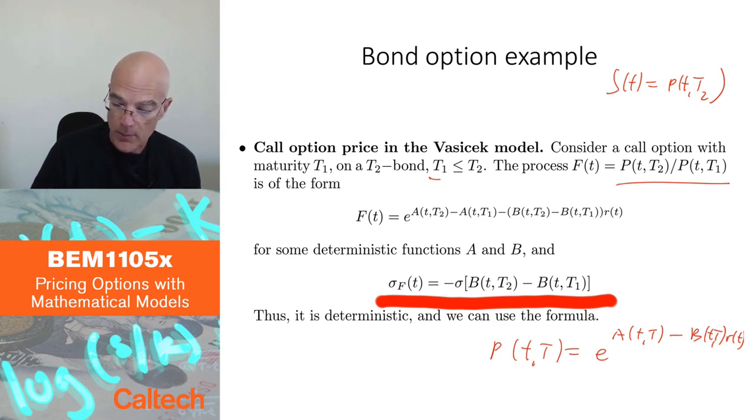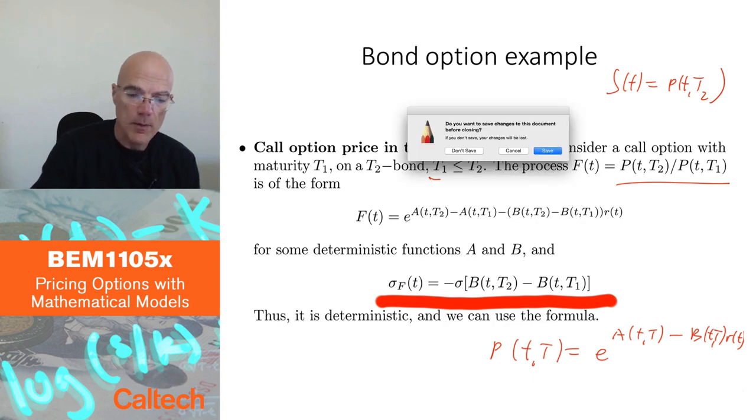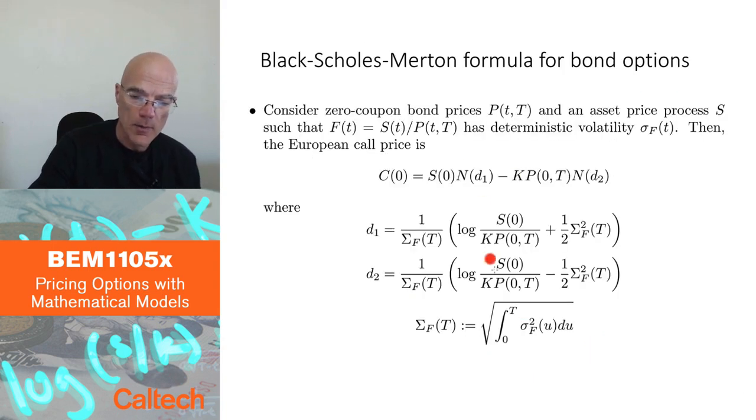So I would just say that the price of the bond option, call option on a bond, is given by this formula. Where instead of this capital sigma F, I use this. Where sigma F, I just show you what it is in the next slide. It's B(T,T2) minus B(T,T1) with a minus sign times sigma. So I use that to compute the capital sigma.